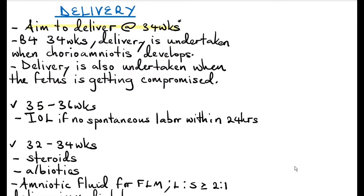The aim in PPROM is to deliver the patient at 34 weeks gestational age, buying time for fetal lungs to mature. If it is before 34 weeks, delivery is only undertaken when chorioamnionitis develops or when the fetus is getting compromised, such as in fetal distress.